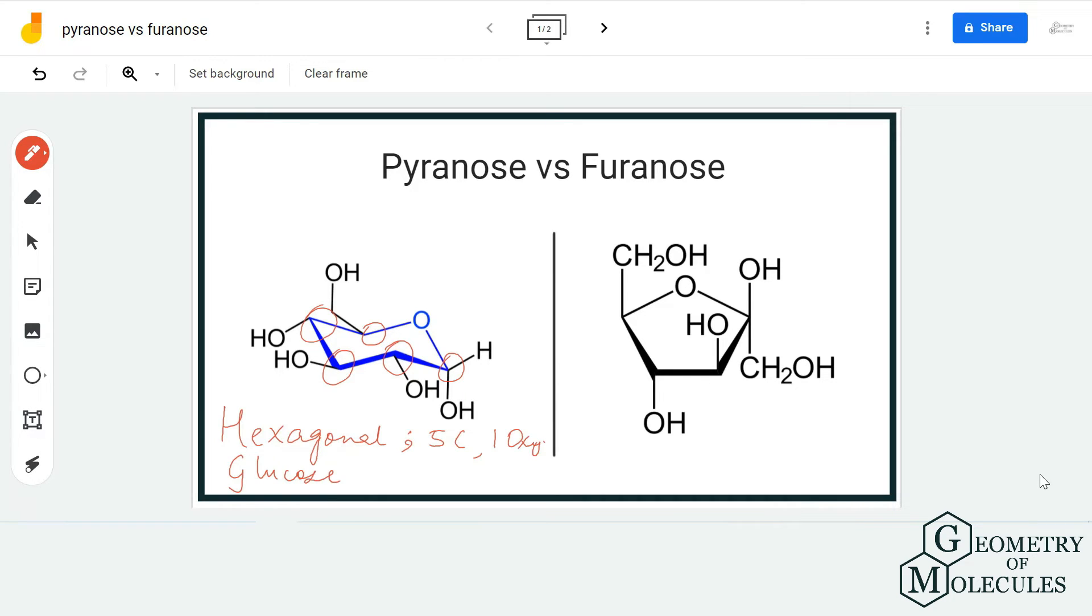When you come to furanose, it has a pentagonal structure with four carbon atoms and one oxygen atom. As you can see over here, the basic difference between these two ring structures is that this one is hexagonal.